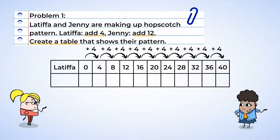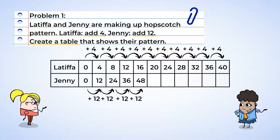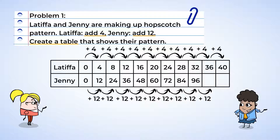Now we can fill in the table with Jenny's pattern. 0 plus 12, well that's 12. 12 plus 12 is 24. We keep on going: 36, 48, 60, 72, 84, 96, 108, and finally 120.